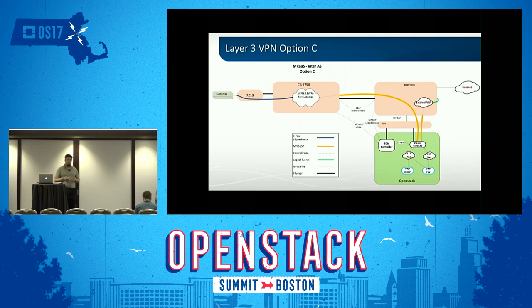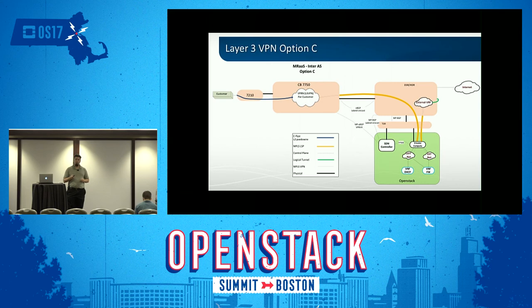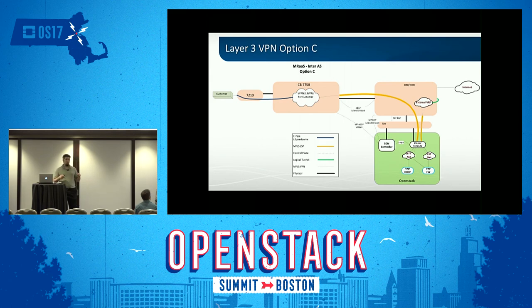Option C is pure labeled unicast. The transit network has no idea what the end-to-end routes are—it doesn't need to. Labeled unicast provides a tunneling label from one domain to another, leveraging MPLS labeling mechanisms in pure data plane mode with no control plane involvement. BGP sessions are set up only between the domains that want to advertise routes to each other, and the transit network is oblivious—it is simply data plane.